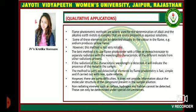The best method is to use a flame photometer with a filter or monochromator to separate radiations with the wavelength characteristics of the different metals from other radiations present. If the radiation of the characteristic wavelength is detected, it will indicate the presence of the metal in the sample. The method to carry out detection of elements by flame photometry is fast, simple, and carried out with care quite reliably.